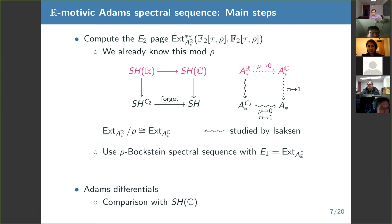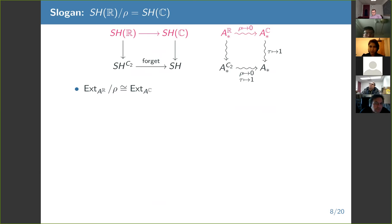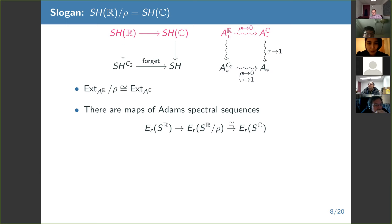There's also Adams differentials. The main strategy with Adams differentials is to use comparison with C-motivic stuff again. Here are some relationships: if you take the R-motivic Adams E2 page for the sphere and mod out by rho, you get the C-motivic E2 page for the sphere.